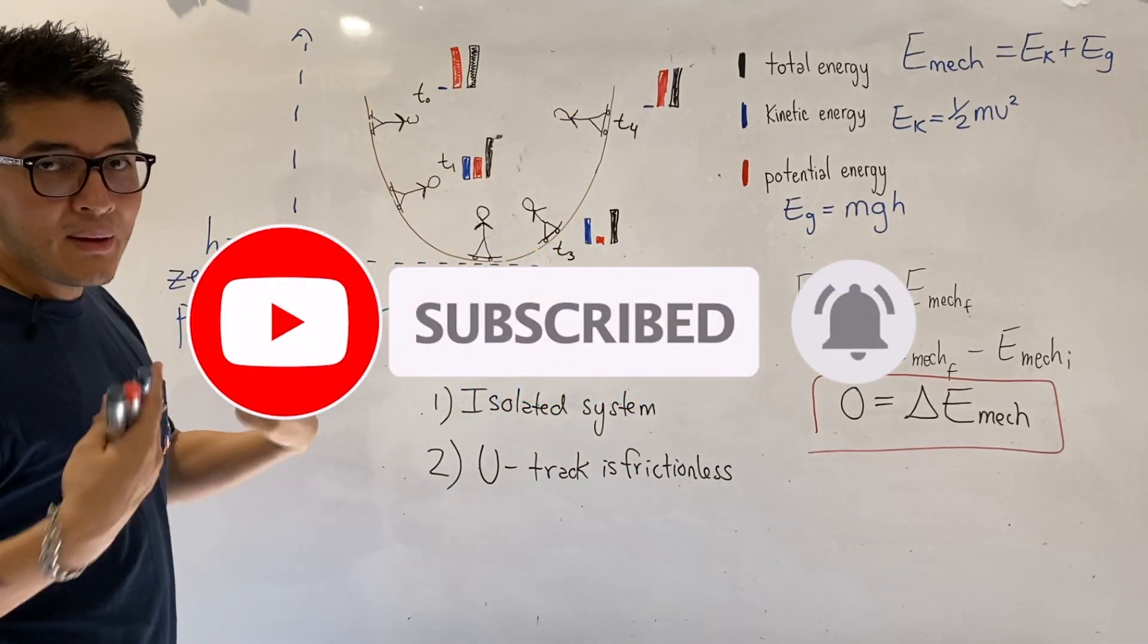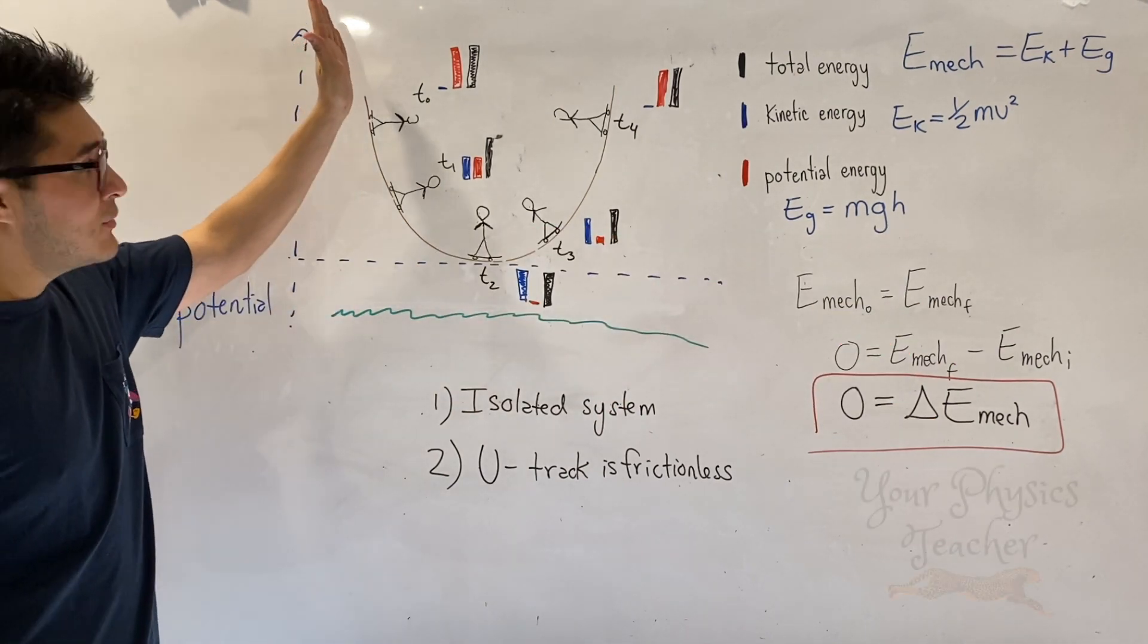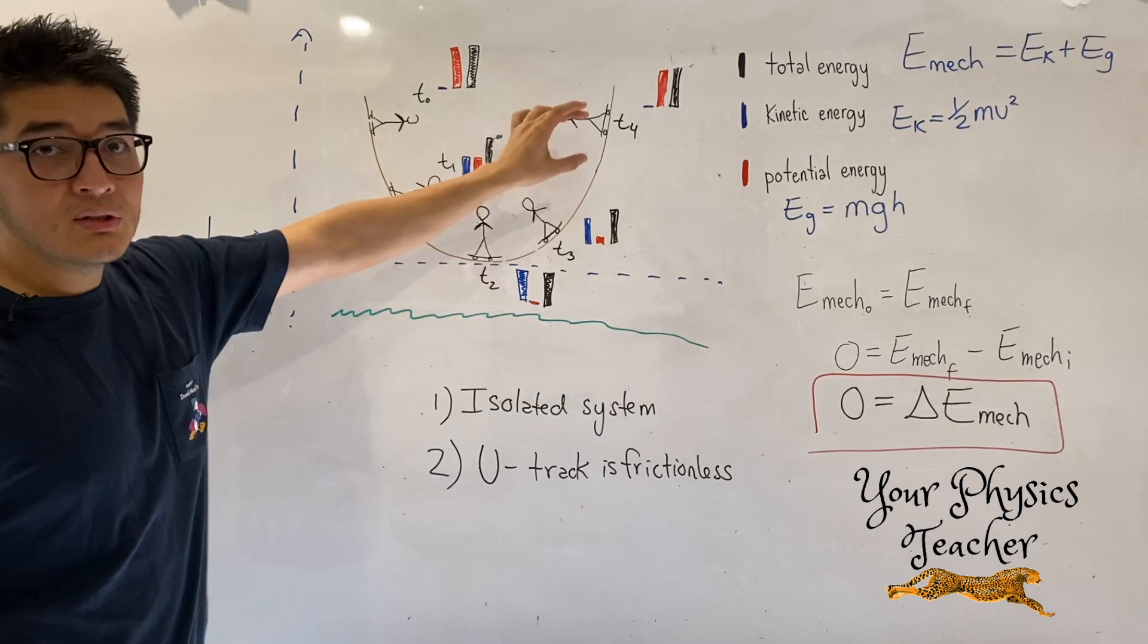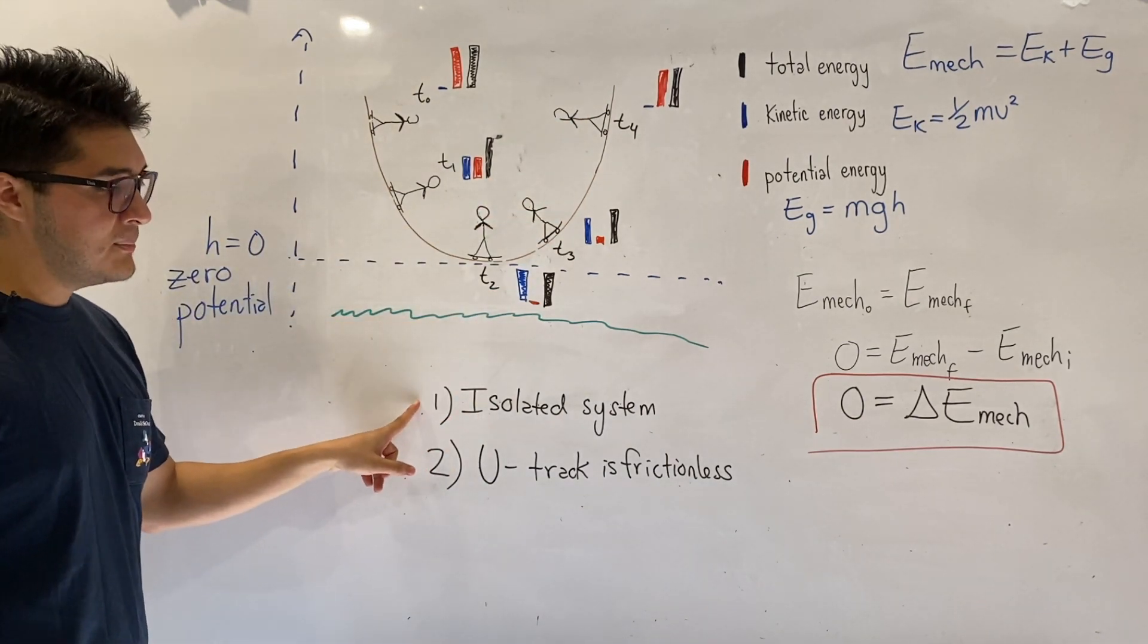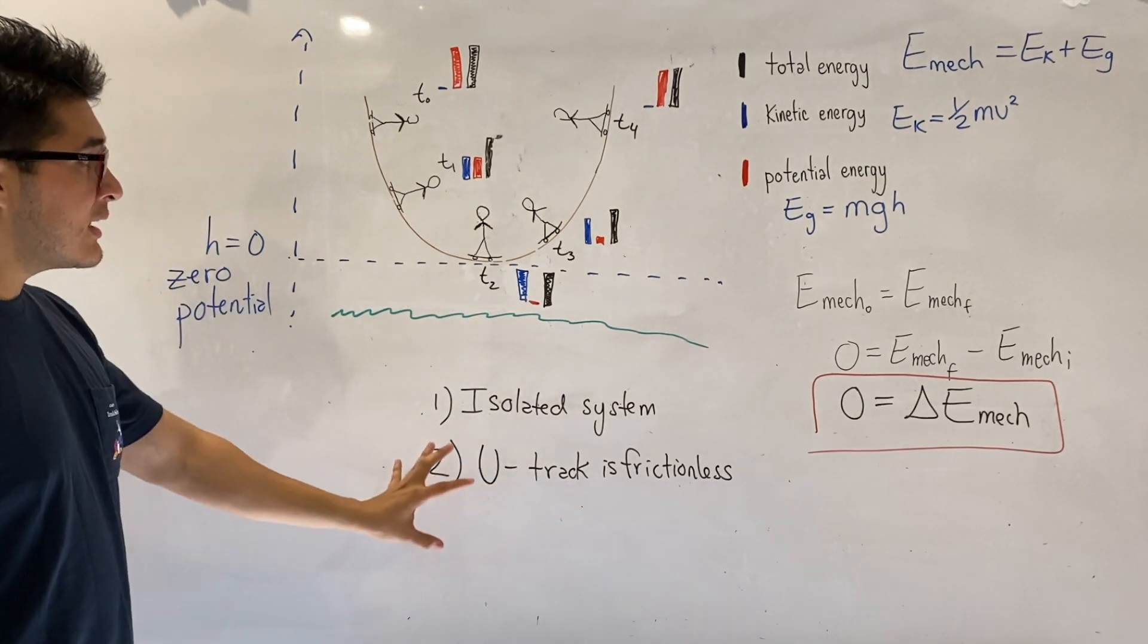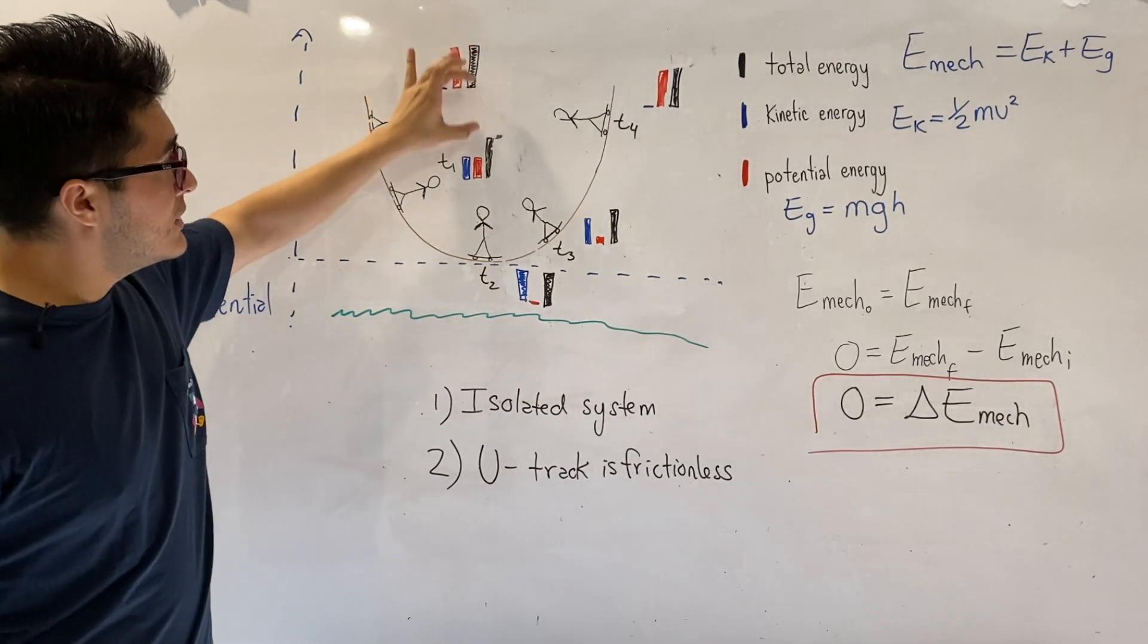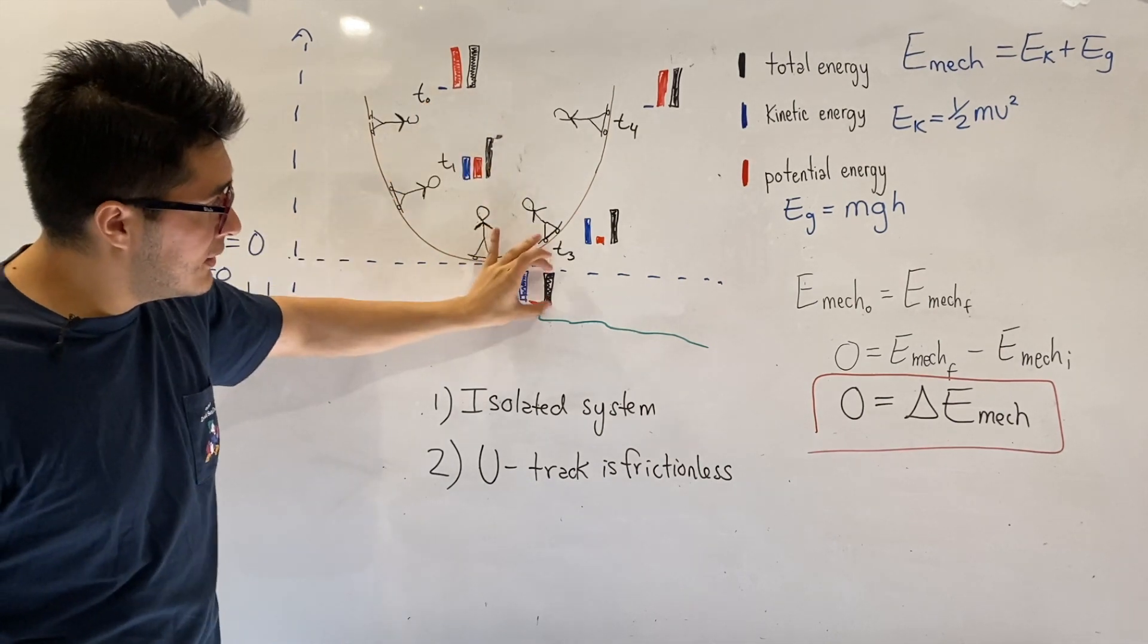If you're coming back and you've watched the previous video, we're using the simulation here where we consider a theme park and this is a U ramp. We're going to have a skater at multiple positions and we're going to consider the skater to be in an isolated system and the ramp to be frictionless. When this is the case and we set our potential to be zero at the lowest point, our mechanical energy, which is the total energy as well in this case, did not change.